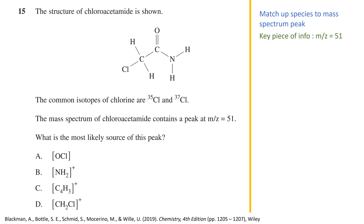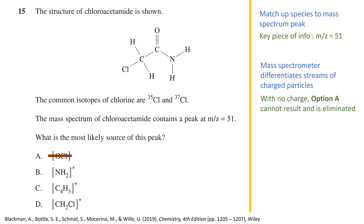The main piece of information is the mass to charge ratio of 51. Importantly, it comes from a mass spectrometer, which identifies chemical species by electrically charging a sample so that particles can be deflected by a magnetic field and separated based on mass. The key is that the particle must be electrically charged. We can therefore eliminate option A, as OCl carries no charge and would not be detectable in a mass spectrometer.